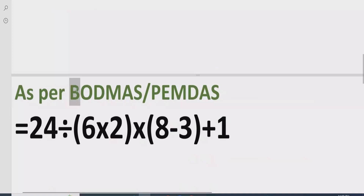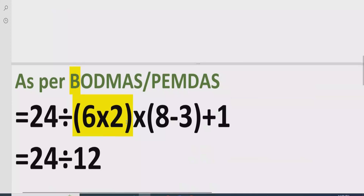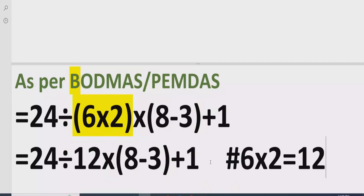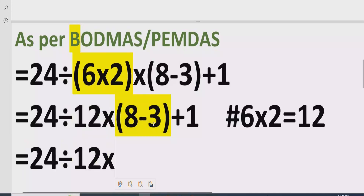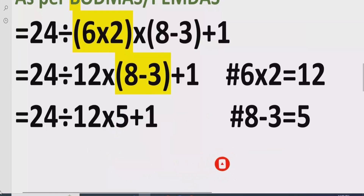Step one says: solve all brackets first. Here we have the first bracket — we solve it and write everything else as it is. We have 6 multiplied by 2, which equals 12. Now we move to the next bracket: 8 minus 3, which equals 5, plus 1. We write the reference for each step.